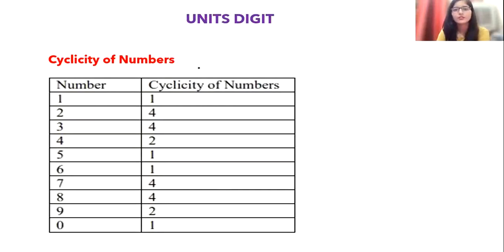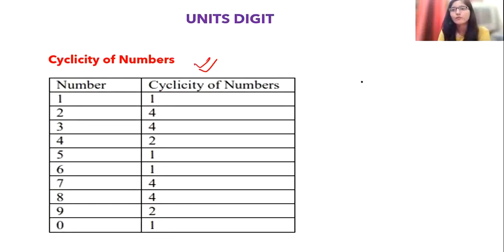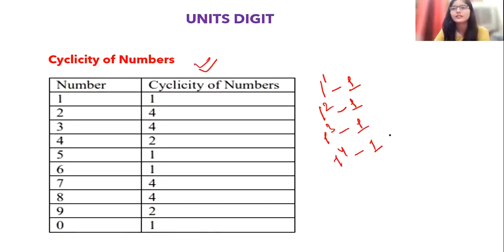You can either memorize the cyclicity table or derive it. The cyclicity of 1 is 1: no matter what power you raise 1 to, the unit digit is always 1. For 2: 2¹ gives unit digit 2, 2² gives 4, 2³ gives 8, 2⁴ gives 6 (from 16), and 2⁵ gives 32 — unit digit 2 again. The pattern 2, 4, 8, 6 repeats every 4 cycles, so the cyclicity of 2 is 4.